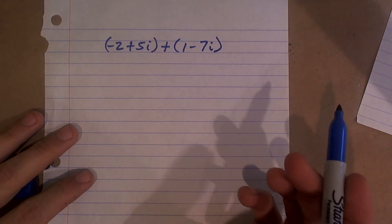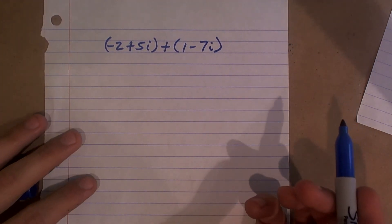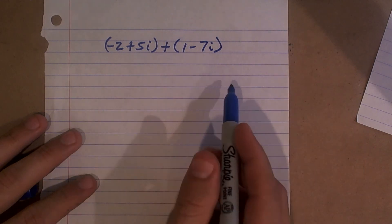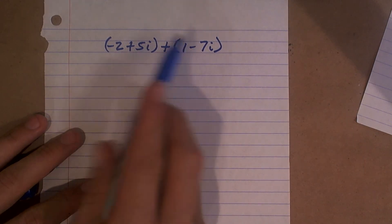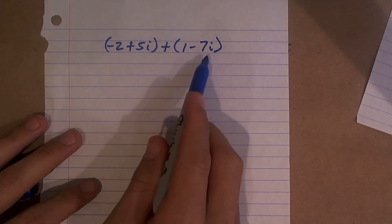The other thing is you want to make sure we're adding like polynomials. We want to make sure we're only combining like terms, meaning I can only combine my negative 2 and my 1, and my 5i and my negative 7i.